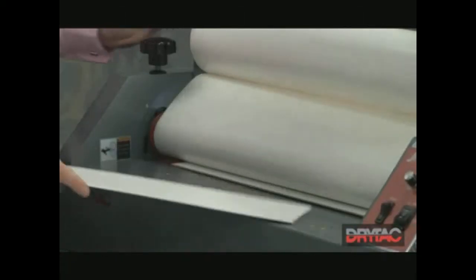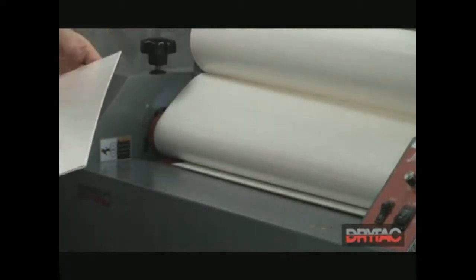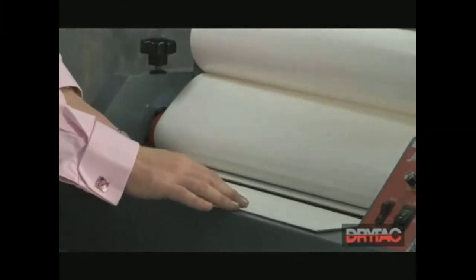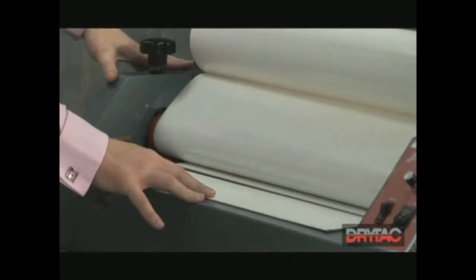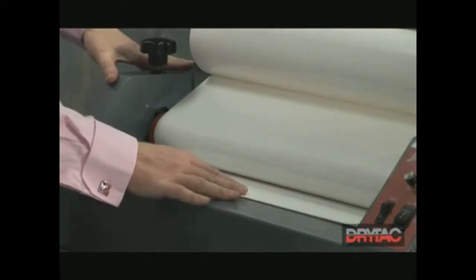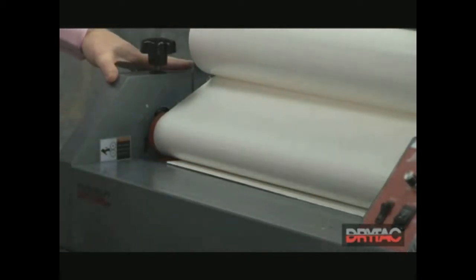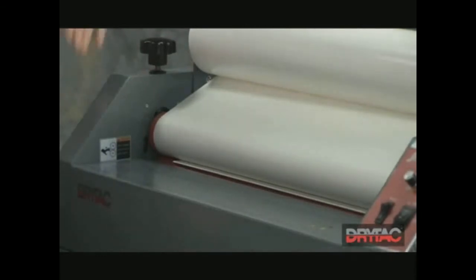Once you've processed your last board, take the leader board that you used to start off the work behind the last piece of board, just so that you can send the material through the rollers and trim the last board off at the back.